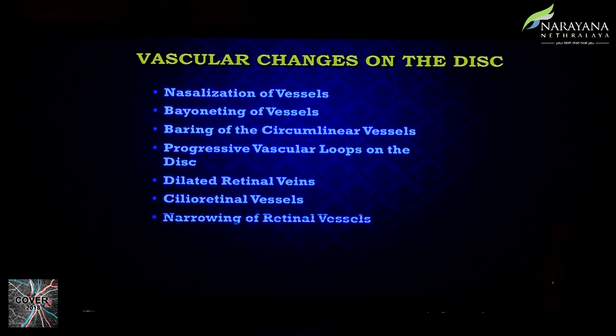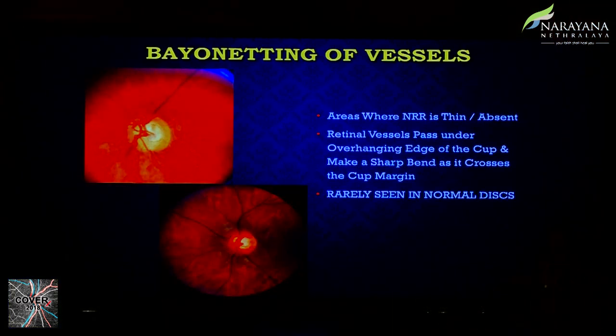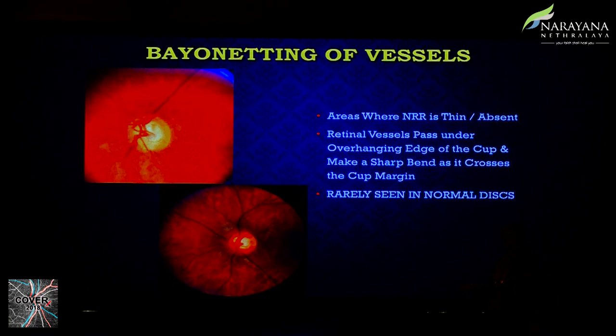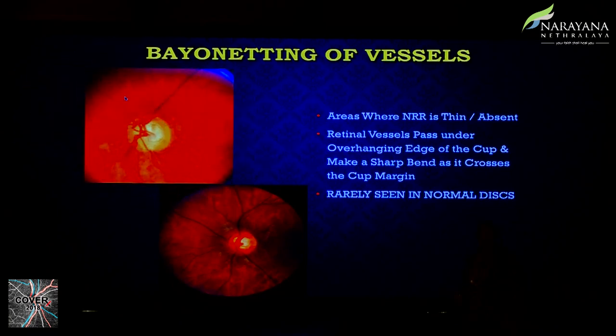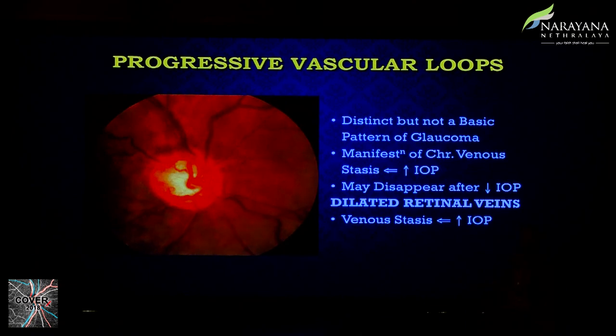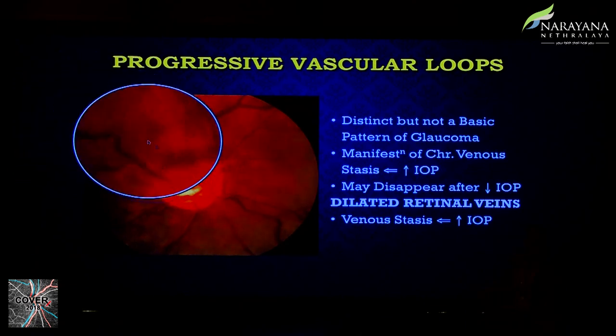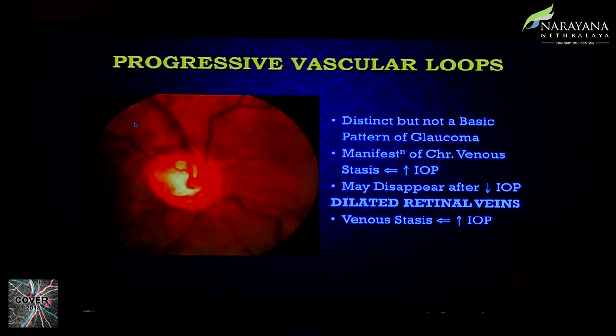Moving on to vascular changes on the disc: not all are pathognomonic, and not all are always visible, but what you can see includes nasalization of vessels. Bayoneting — where the blood vessel dips at the cup margin — can raise suspicion. Progressive vascular loops may also be seen, though they can disappear with lowered intraocular pressure.